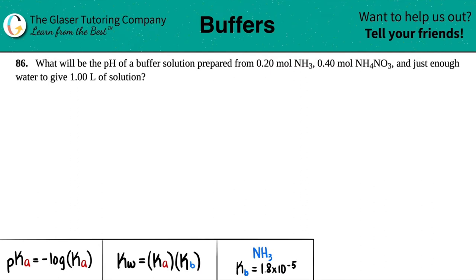Number 86. What will be the pH of a buffer solution prepared from 0.20 moles of NH3, 0.40 moles of NH4NO3, and just enough water to give 1.00 liters of solution? Okay, so a couple of things here.